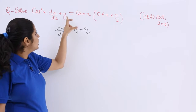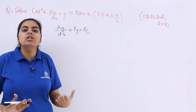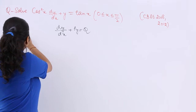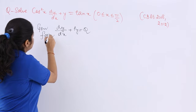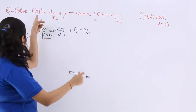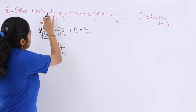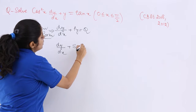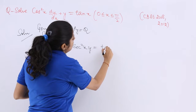You cannot say P is 1 and Q is tan x because first you need to make it in the general form. So let's start with the solution. The general form is dy/dx + Py = Q, and to compare, I have to first divide the equation by cos²x. Dividing by cos²x gives 1 on the left.